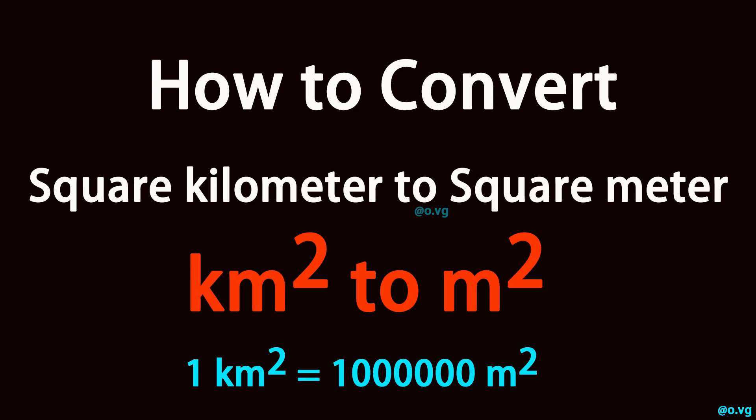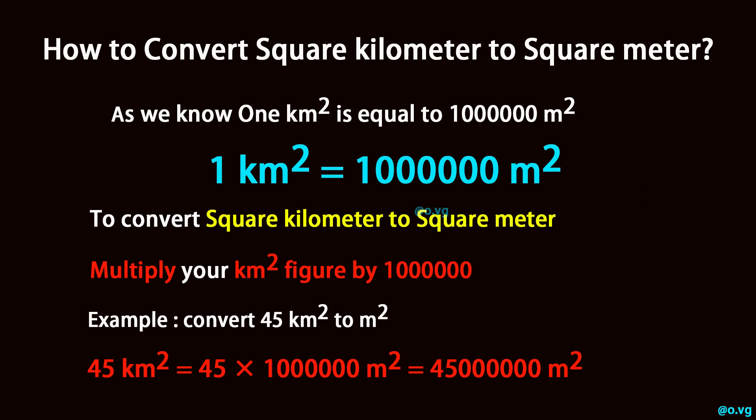How to convert square kilometer to square meter. As we know, one square kilometer is equal to one million square meters. To convert square kilometers to square meters, multiply your square kilometer figure by one million.